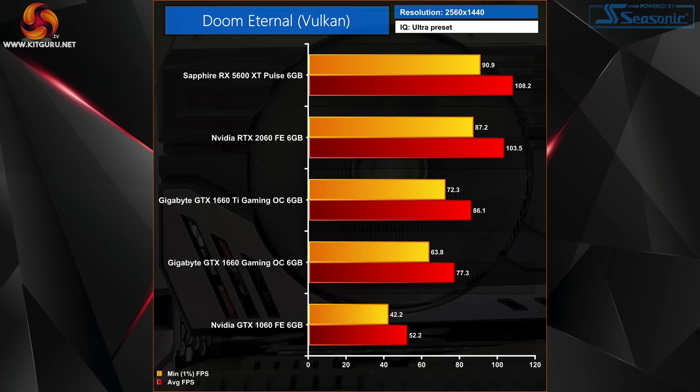For 1440p gamers, the GTX 1060 can just about deliver a reasonable experience, though it can't quite maintain 60fps at all times. The other four GPUs on the chart did stay above 60fps at all times, with both the 5600 XT and RTX 2060 averaging over 100fps at 1440p. The 1% lows are nice and tight, with no choppiness throughout the playthrough — very solid performance.